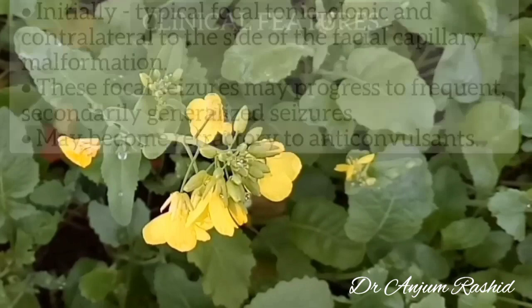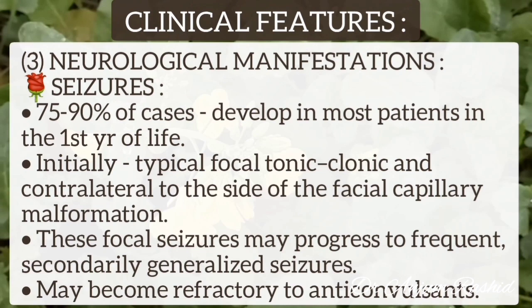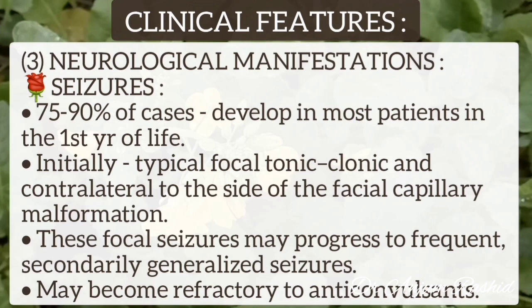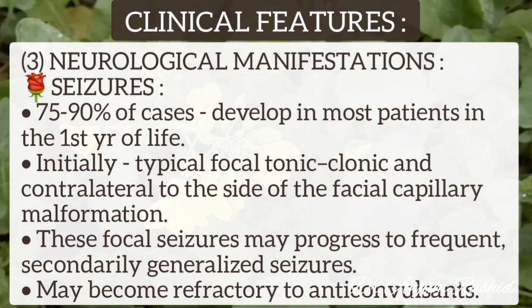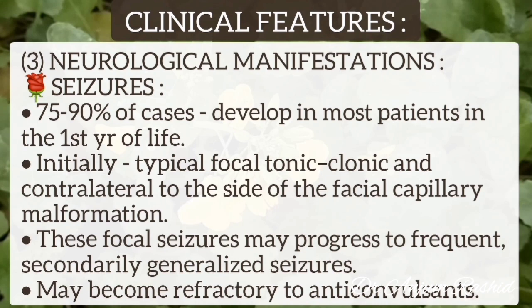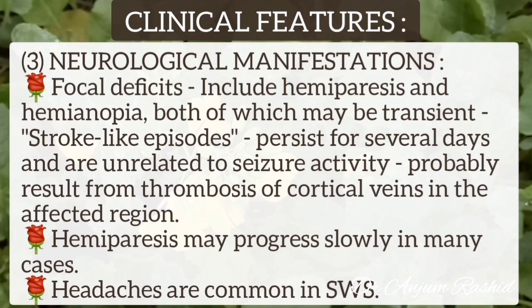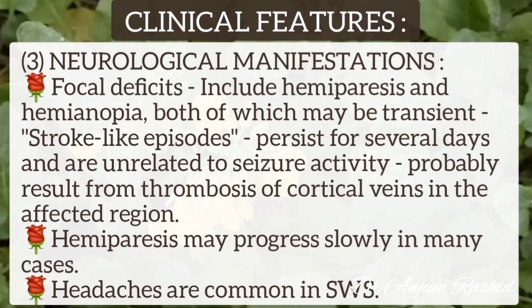The third important feature of Sturge-Weber syndrome is the neurological manifestations. These include seizures, which are present in 75 to 90 percent of cases, and most patients develop seizures in the first year of life. Initially there are typical focal tonic-clonic seizures contralateral to the site of the facial capillary malformation. These focal seizures may progress to frequent generalized seizures, and mostly these seizures become refractory to anticonvulsants. Focal deficits are also common, including hemiparesis and hemianopias, which may be transient and are called stroke-like episodes.